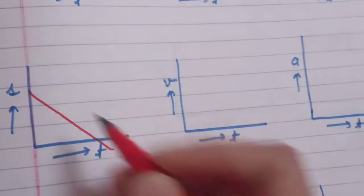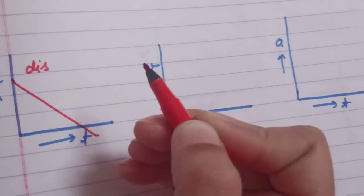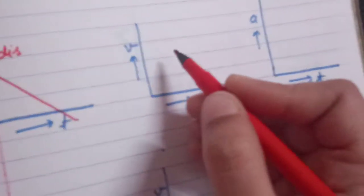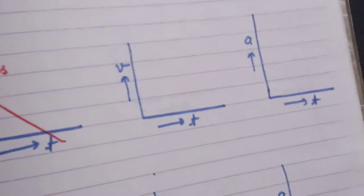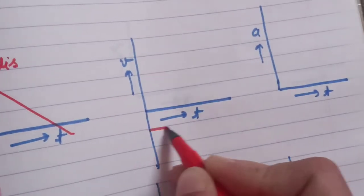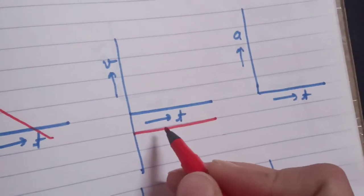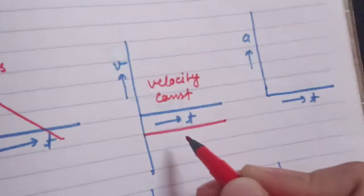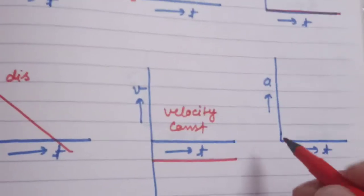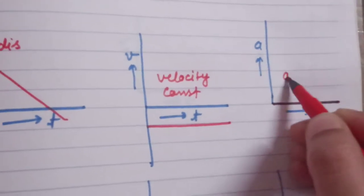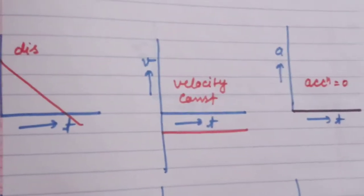If displacement is constant, velocity is zero. If velocity is constant, acceleration is zero. The third condition is when displacement decreases — the velocity varies but on the negative side. In the AT graph at the same condition, acceleration is zero.